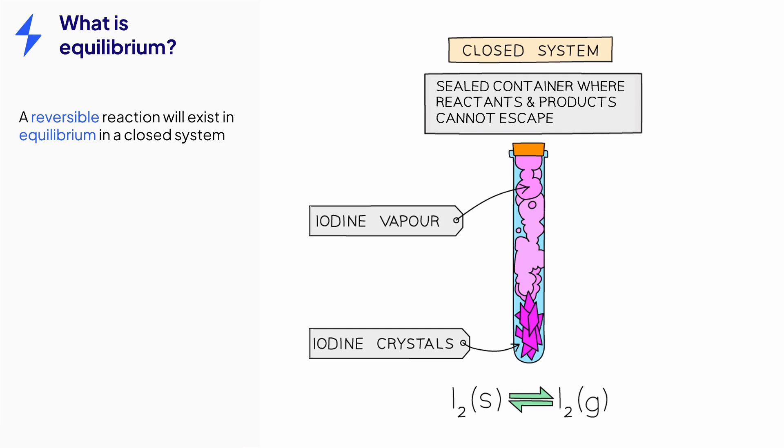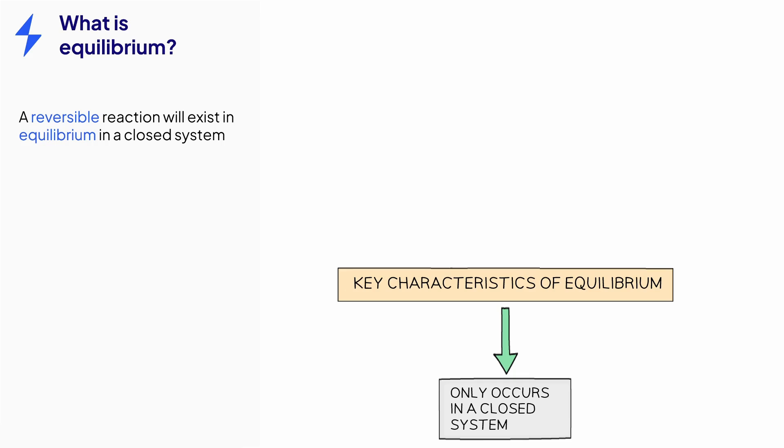In this example, the sealed container prevents this from happening and an equilibrium exists between the iodine crystals and iodine vapor. So equilibrium only occurs in a closed system. Let's explore what the term equilibrium means further.